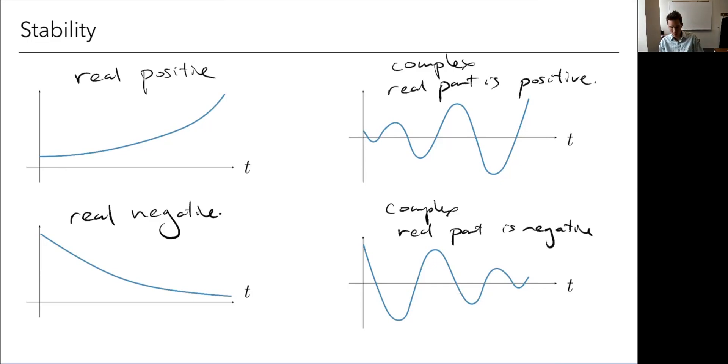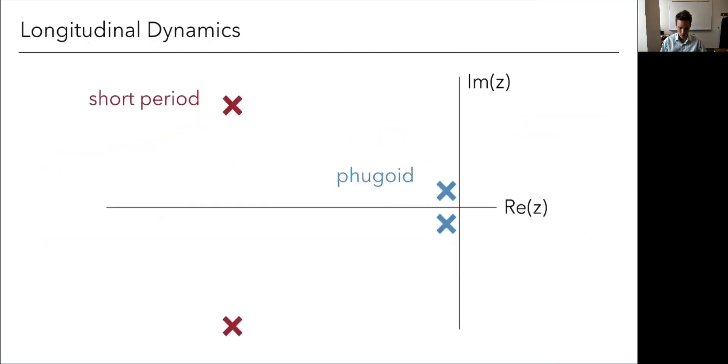Okay, so now we're going to look at the eigenvalues for a typical aircraft. Most aircraft are going to have these same kind of eigenvalues, although sometimes you'll have some differences if you do something really different, but this is very common. The first we'll look at the longitudinal dynamics. This is our pitching direction. And what we see here are two complex conjugate pairs.